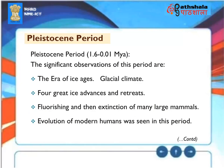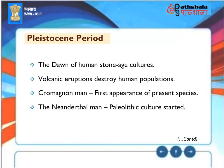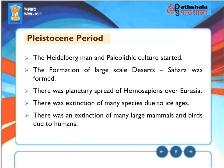The Pleistocene period (1.6 to 0.01 Mya): the era of ice ages, glacial climate, four great ice advances and retreats. Flourishing and then extinction of many large mammals. Evolution of modern humans was seen. The dawn of human Stone Age cultures, volcanic eruptions destroying human populations, first appearance of Cro-Magnon man, Neanderthal man and Paleolithic culture, Heidelberg man and Paleolithic culture, formation of large-scale deserts including the Sahara, planetary spread of Homo sapiens over Eurasia, and extinction of many species due to ice ages and large mammals and birds due to humans.